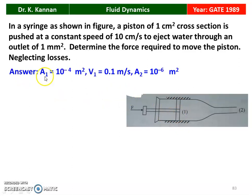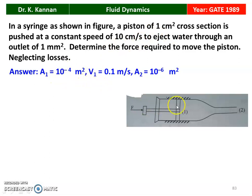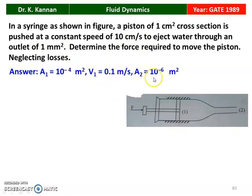Given data: A1, area of the piston, equals 1 cm², which is 10⁻⁴ m². Velocity at section 1 is 10 cm/s, which is 0.1 m/s. Area at section 2 is 1 mm², which is 10⁻⁶ m².